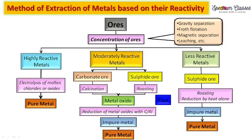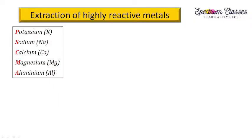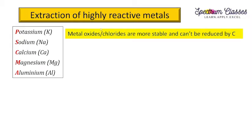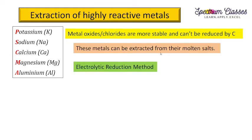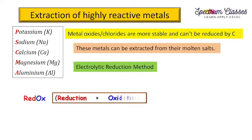We are going to discuss these processes one by one by taking different examples. For highly reactive metals, these metals are generally present in their oxides, chlorides, sulfates, and carbonates. These metal oxides and chlorides have high affinity towards oxygen and chlorine compared to carbon, because these metals are more reactive than carbon. So they can't be reduced using carbon, which is why they are extracted from their molten salts by electrolytic reduction.